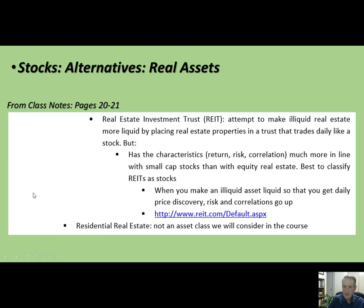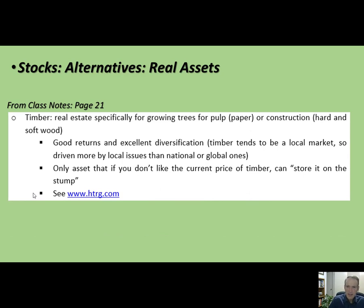Then you have residential real estate. We're not going to address that in this class because it's really not an asset class you can get into as a big institutional investor. As a small investor, you can certainly buy houses around the city and rent them out, but that's a little beyond the scope of this class. The second alternative — and this will probably be as far as we get today — is timber. I really love timber as an asset class. I find it really interesting. Timber is interesting because it's both real estate and a commodity.